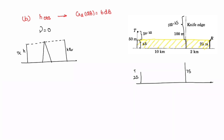We denote the receiver at a dotted baseline. Since V equals zero, the signal grazes the edge of the obstacle. We need to find the new obstacle height h' such that the line from the transmitter (height 25 m) just touches the top of the obstacle and reaches the receiver at ground level. D1 is 10 km and D2 is 2 km.